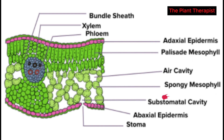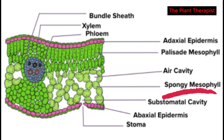The lower region, consisting of loosely arranged spherical parenchyma cells with abundant air spaces separating them, is called the spongy mesophyll. Its cells also have numerous chloroplasts. The loose arrangement of cells on the shady side of the leaf allows for free movement of carbon dioxide taken in through the stomata.